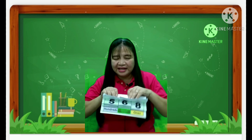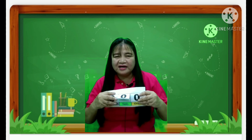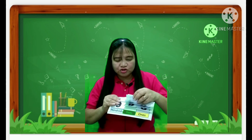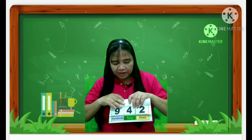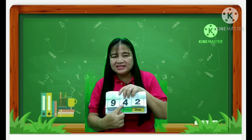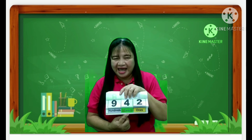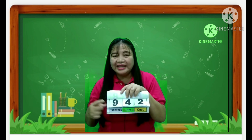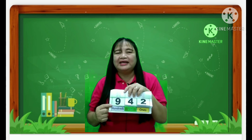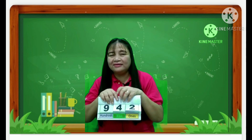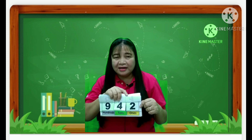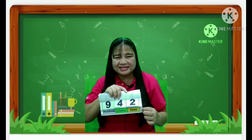Very good, children. Let's have another number — nine hundred forty-two. What is the place value of 4? Correct, it's tens. What about the place value of 9? Correct, it's hundreds. What about the place value of 2? You got it right — it's ones. Very good, children.